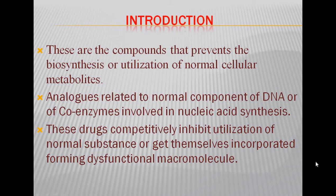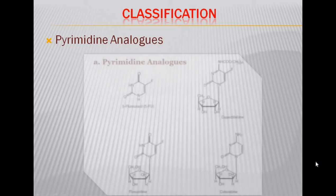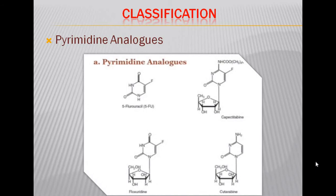Anti-metabolite drugs can be classified as pyrimidine analogues, purine analogues, and folic acid analogues. The pyrimidine analogues include 5-fluorouracil, floxuridine, capecitabine, and cytarabine. These pyrimidine analogues inhibit the biosynthesis of pyrimidine nucleotides or alter their form, interfering with normal cellular function.